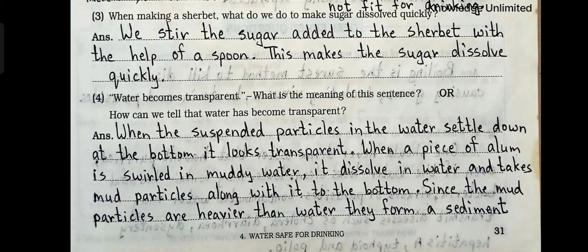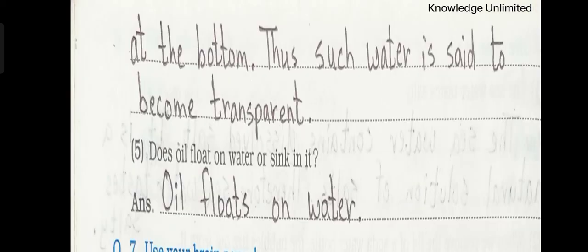Question number three: When making a sherbet, what do we do to make sugar dissolved quickly? Answer: We stir the sugar added to the sherbet with the help of a spoon. This makes the sugar dissolve quickly. Question number four: Water becomes transparent — what is the meaning of this sentence? Answer: When the suspended particles in the water settle down at the bottom, it looks transparent. When a piece of alum is swirled in muddy water, it dissolves in water and takes mud particles along with it to the bottom. Since the mud particles are heavier than water, they form a sediment. Thus such water is said to become transparent.